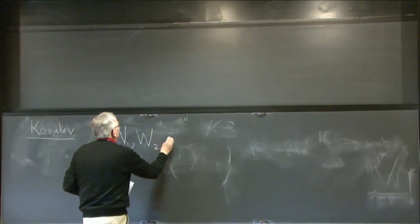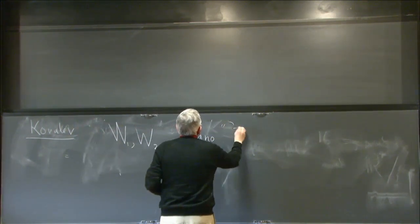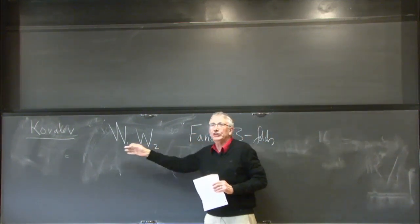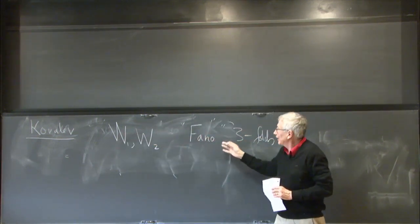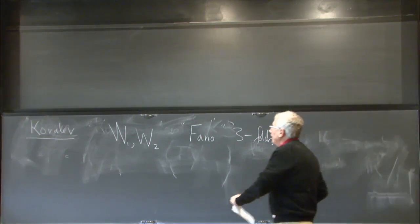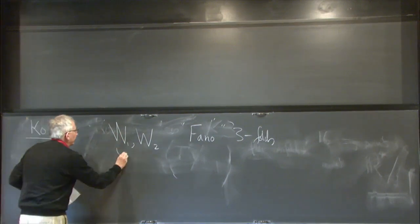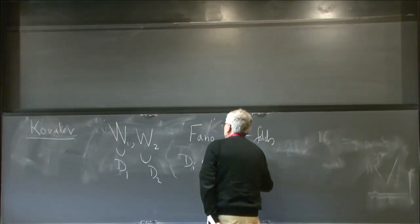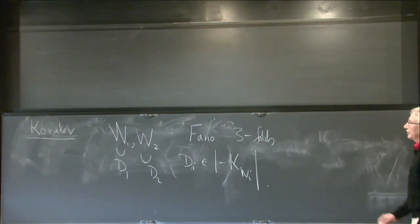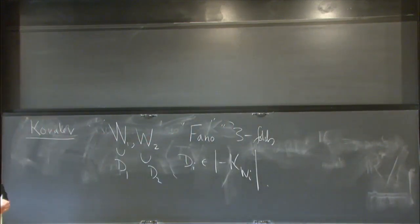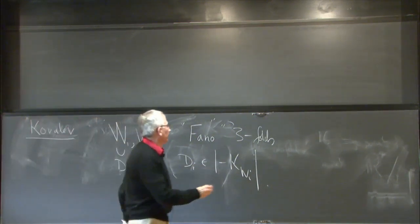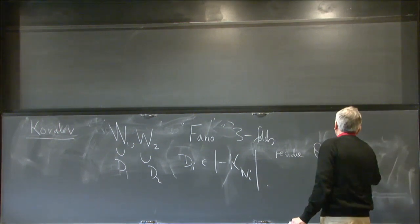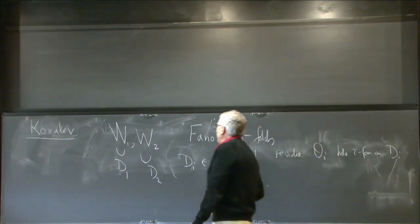We start with W₁ and W₂, a pair of Fano threefolds — putting 'Fano' in inverted commas because one can relax that to semi-Fano or similar conditions. They are three-dimensional compact complex algebraic varieties containing divisors D₁ and D₂, where Dᵢ is in the anti-canonical linear system of Wᵢ. This means there's a meromorphic three-form with a pole along Dᵢ whose residue is a holomorphic two-form on Dᵢ, making these things K3 surfaces.